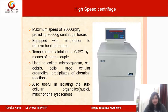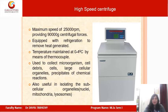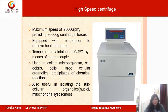High-speed centrifuges exist in efficiency between ultracentrifuges and desktop centrifuges. They have a maximum speed of 25,000 RPM, providing up to 90,000 G of centrifugal force. They are equipped with refrigeration to remove heat generated during operation, maintaining temperatures of 0 to 4°C by means of thermocouples. These are used to collect microorganisms, cell debris, large cellular organelles, and chemical precipitates, and are also useful in isolating subcellular organelles like nuclei, mitochondria, and lysosomes.